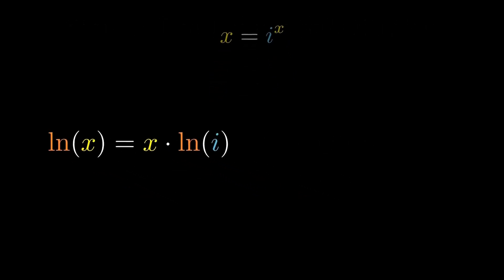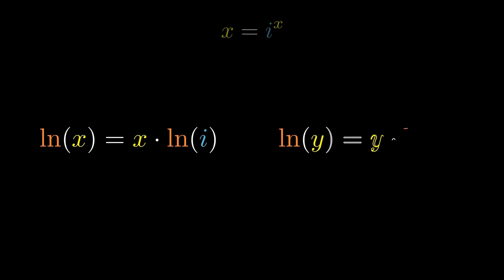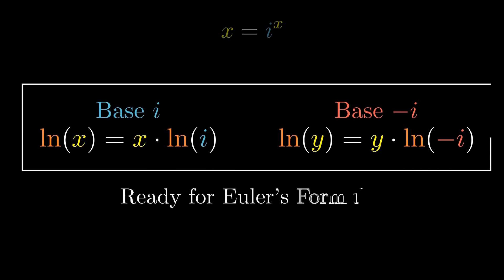the base minus i. At this point, the infinite tower problem has been reduced to two logarithmic equations. And now, we are ready for Euler's formula.